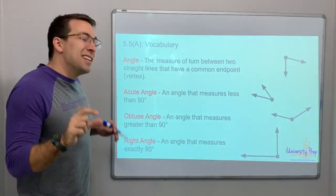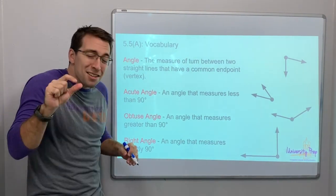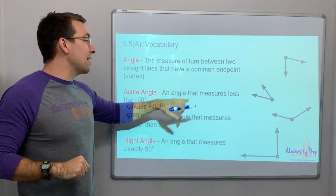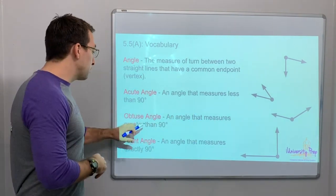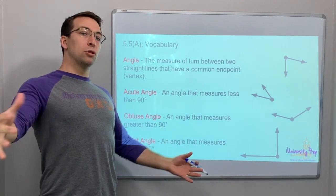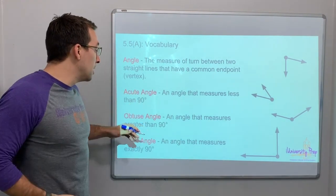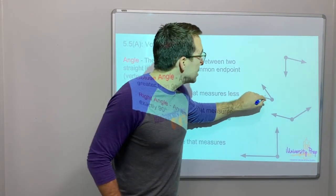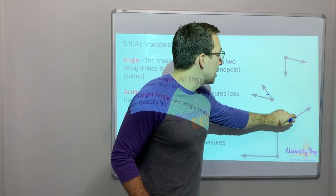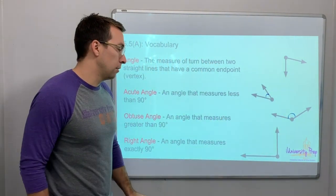An acute - it's a cute little angle. An acute angle is an angle that measures less than 90 degrees. Obtuse is a big old angle, and its angle is greater than 90 degrees. So this is acute, and this is obtuse.